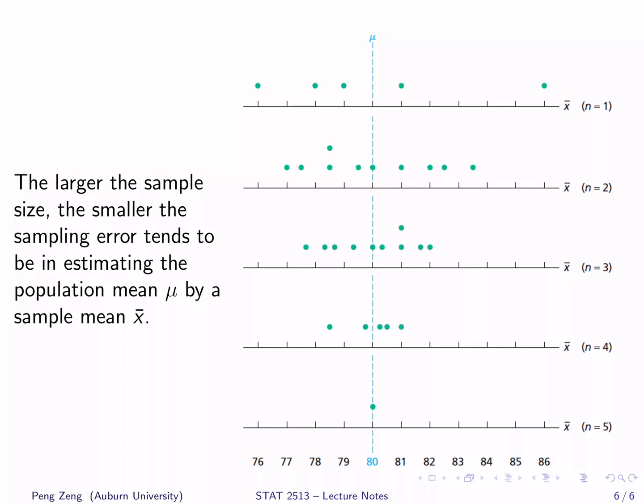As n increases, the variability of the sample means becomes smaller. The larger the sample size, the smaller the sampling error tends to be in estimating the population mean by a sample mean. It gives us a heuristic that in order to get better accuracy in estimating the population mean, the larger the sample size, the better.